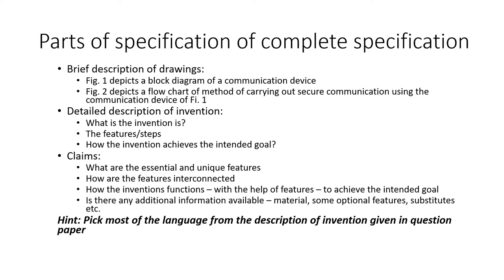From the examination point of view, one important hint: you can pick most of the language from the description of the invention given in the question paper. You need not create any new language. You can pick words or statements from there and use them in all the different parts of the specification. You'll understand more about this as I explain by taking a question that was asked in the patent agent examination.